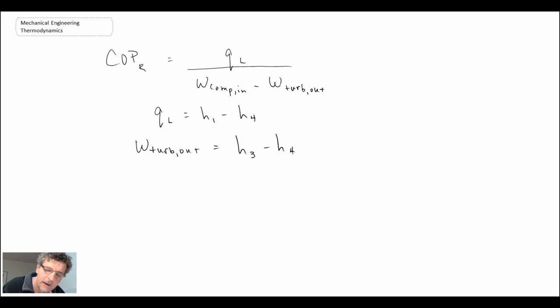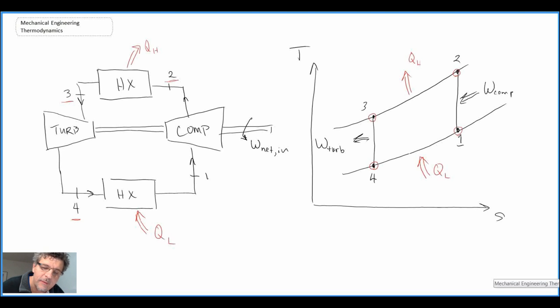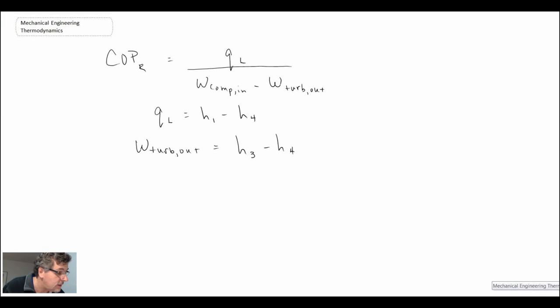Turbine out would be the change in enthalpy between states three and four, and then one and two for the compressor in.